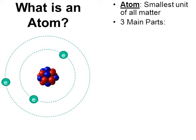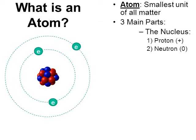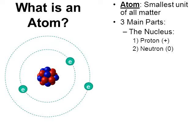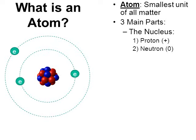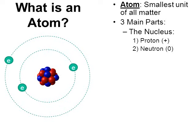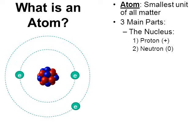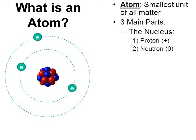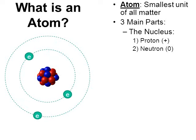There are three main parts to an atom, and two of those parts are in the nucleus. There's a positively charged part called a proton, and there's a part with a zero charge, or a neutral charge, and this is called a neutron. In the picture, the nucleus is represented by the blue and red spheres all clustered together.